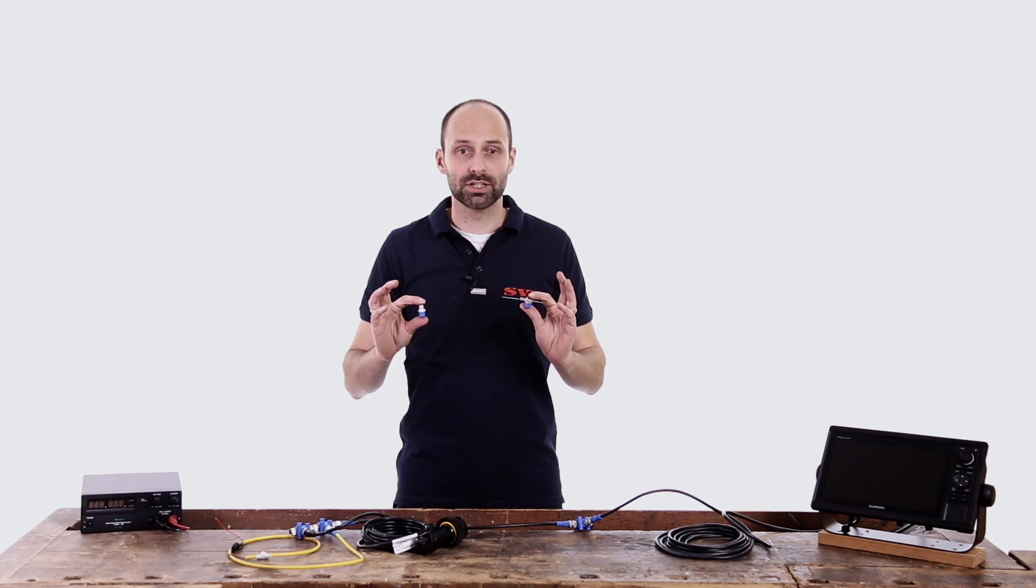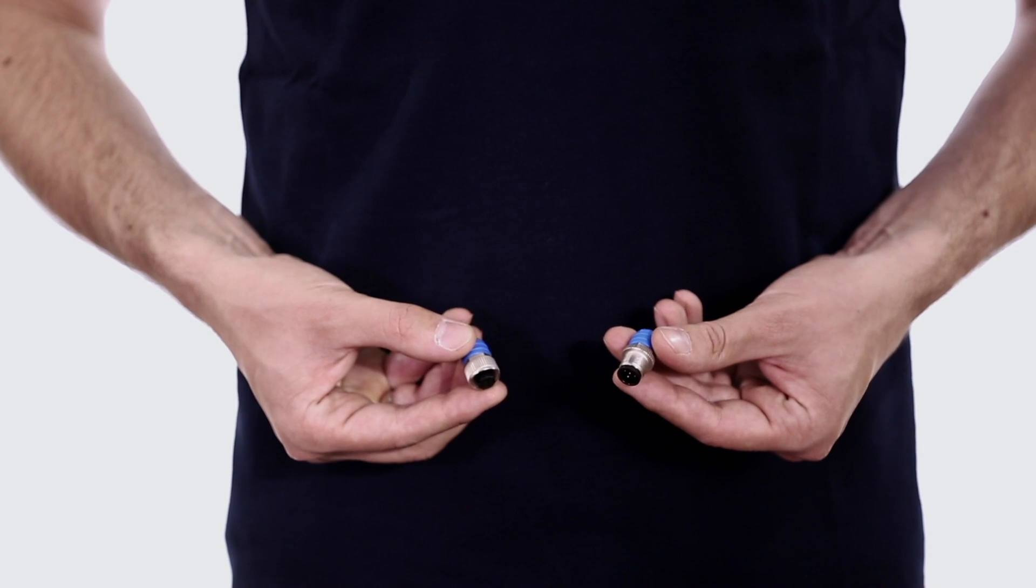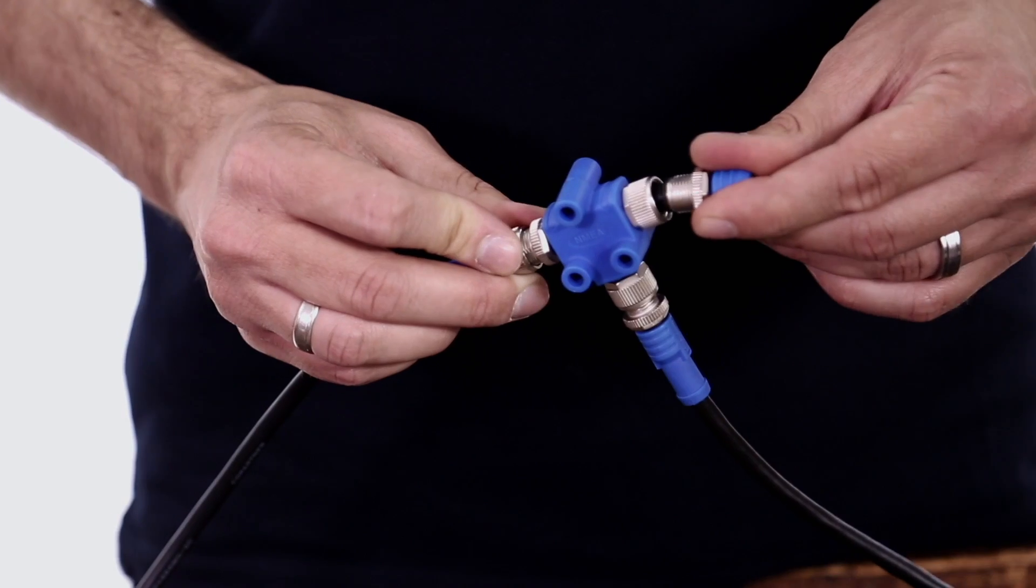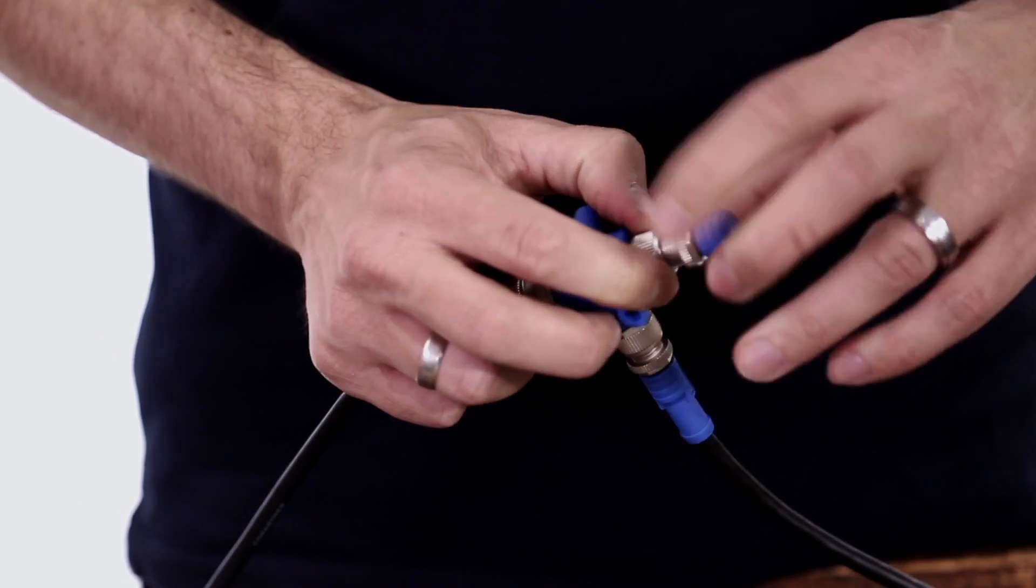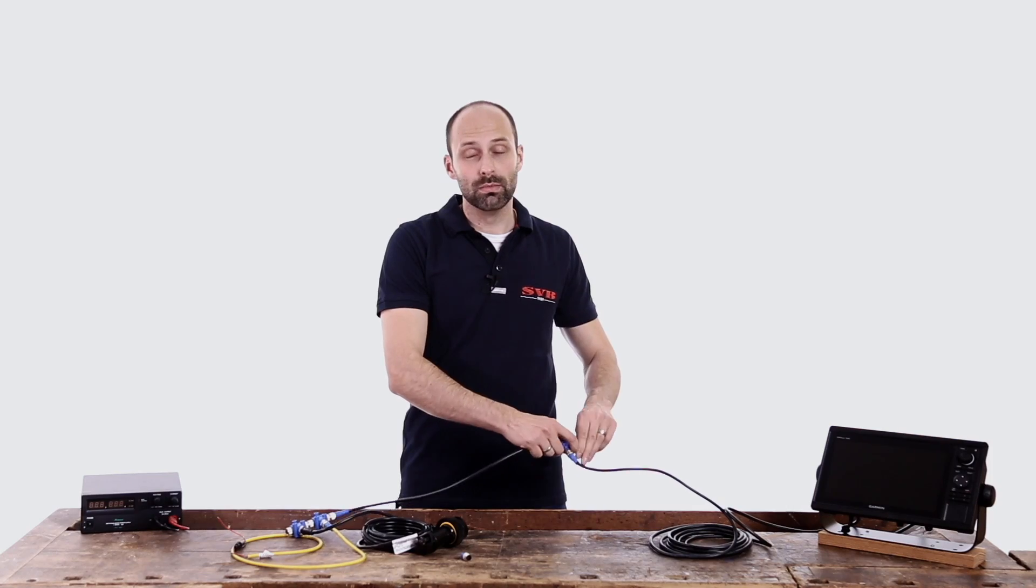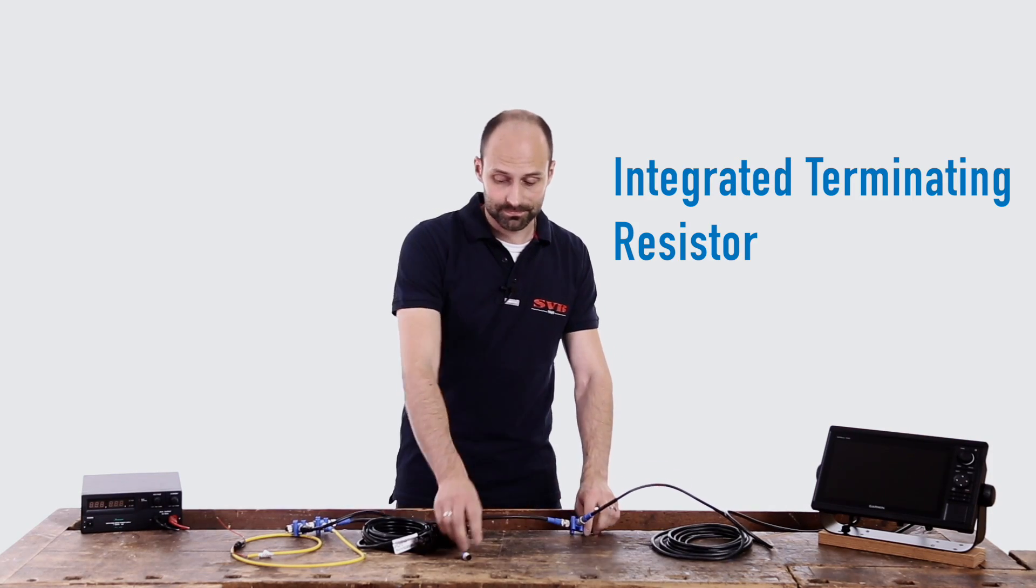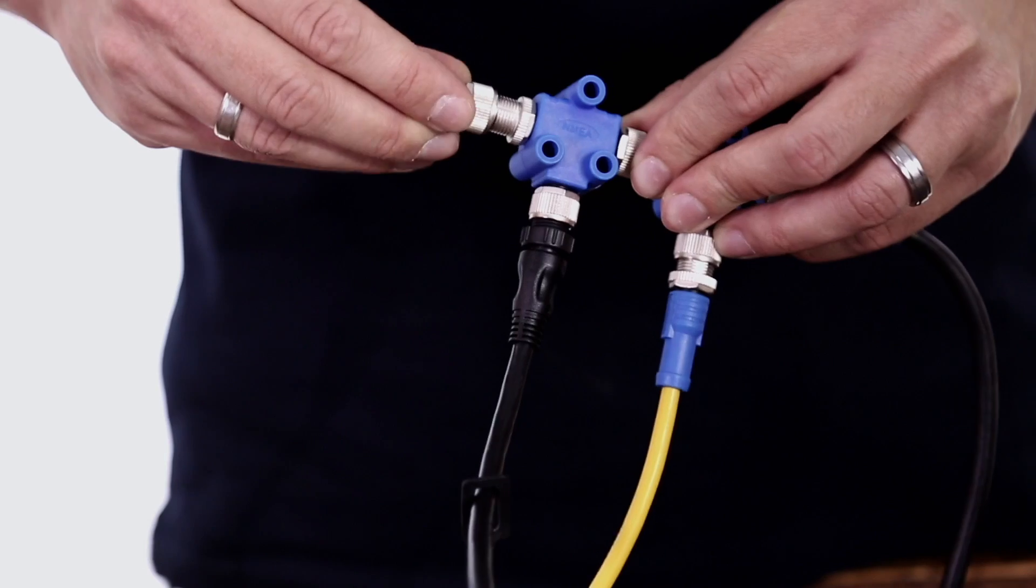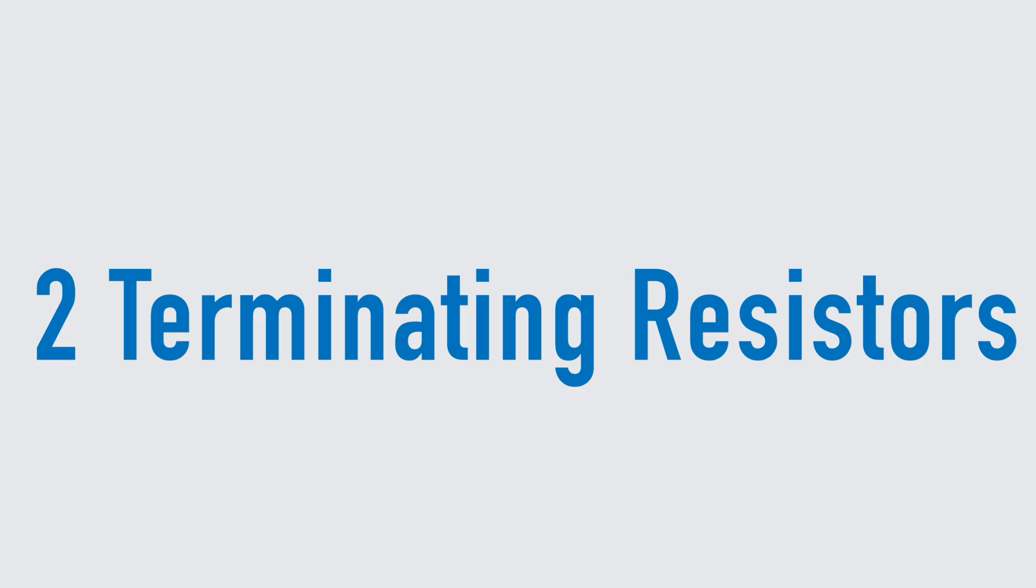To do this we use the two terminating resistors found in our kit and screw these to the two ends of the network. Some NMEA2000 devices, for example wind sensors, could have their own integrated terminating resistor. Depending on the network size, make sure that there are only two terminating resistors in the network.